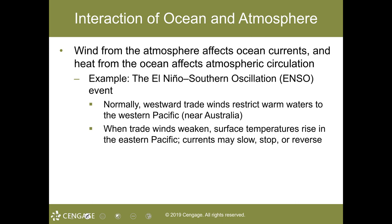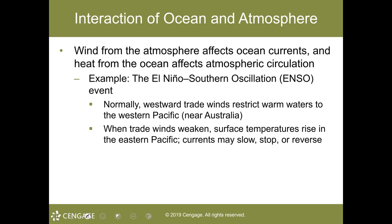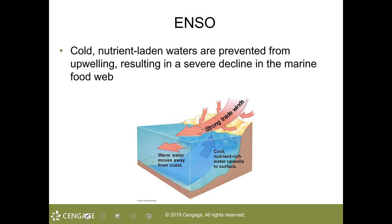Wind from the atmosphere affects the ocean currents, and heat from the ocean affects the atmospheric circulation, which provides for the El Niño Southern Oscillation. Normally, it's the westward trade wind that restricts warm waters to the western Pacific near Australia. As those trade winds weaken, the surface temperatures rise in the eastern Pacific, and the currents may slow, stop, or even reverse. Cold, nutrient-laden waters are prevented from upwelling, resulting in a severe decline in the marine food web.